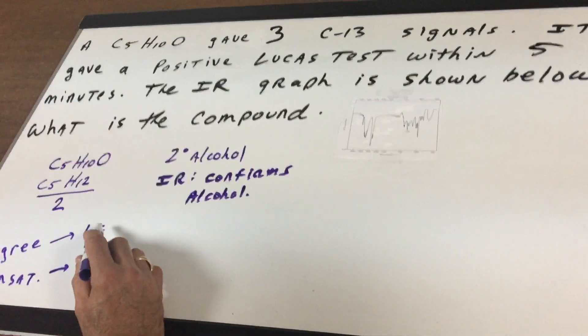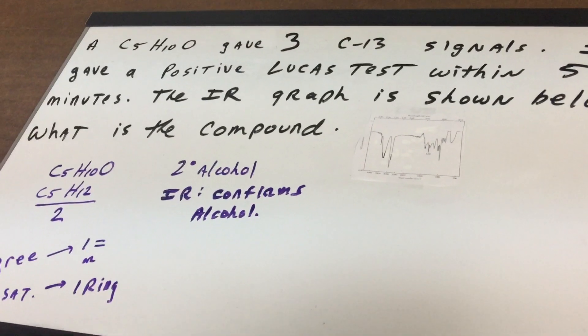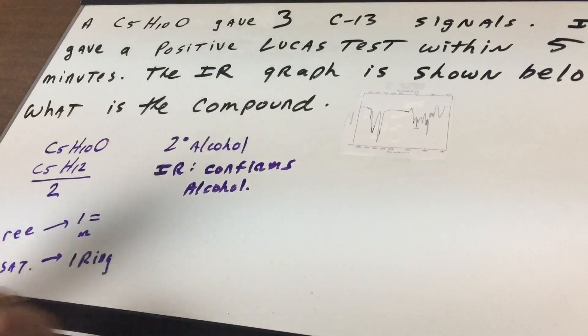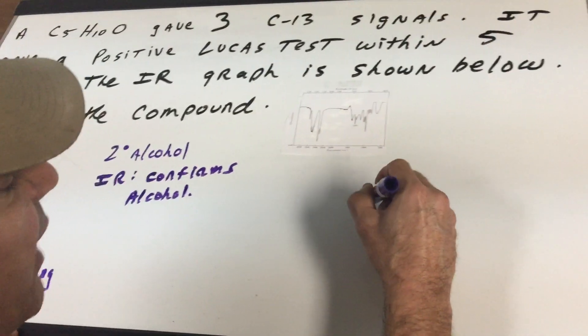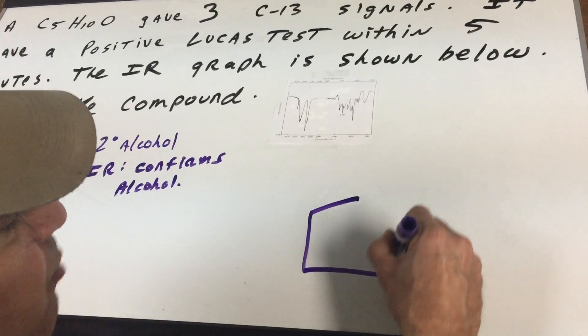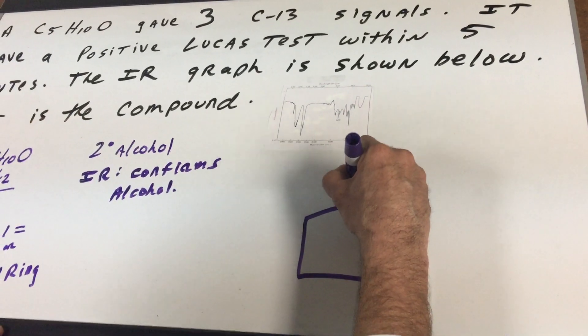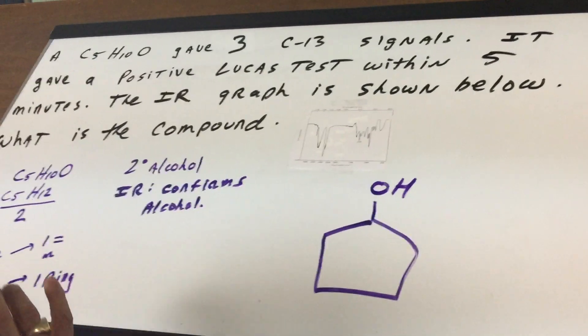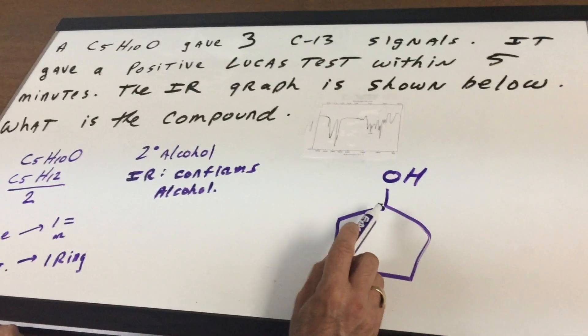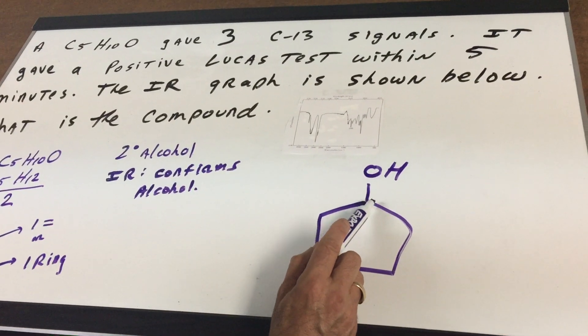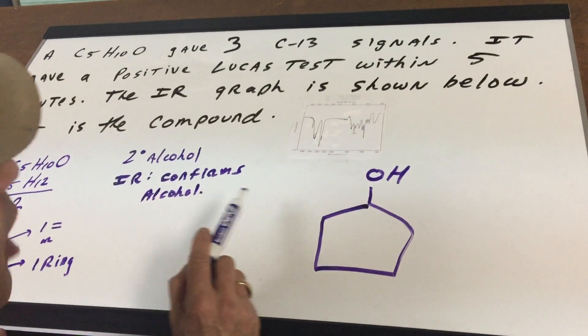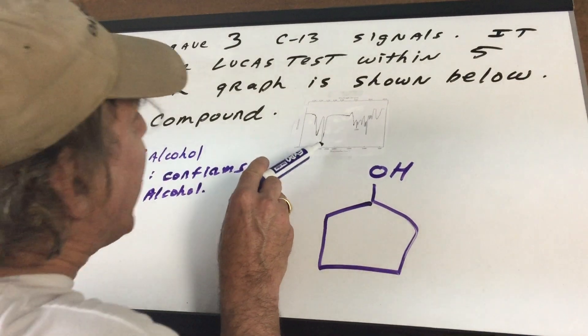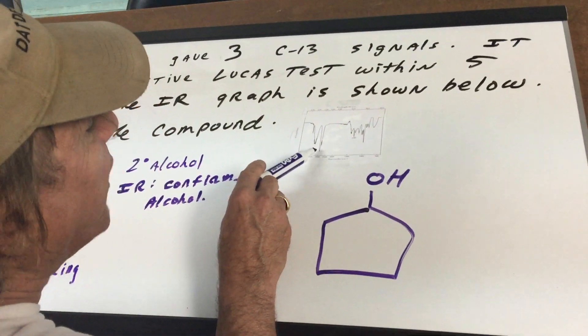Now, so we know it's a secondary alcohol. We know there's no double bond. So I got a feeling this is a ring. Now if this is a multiple choice question on the DAT, the answer will be right there. But let's take a look at a proposal. What if it was a five carbon alcohol? Now the question is, would this give a positive Lucas test within five minutes? Yes, it's a secondary.